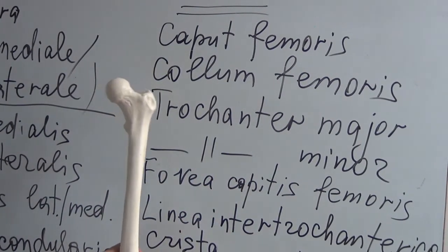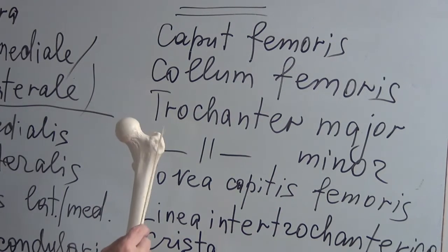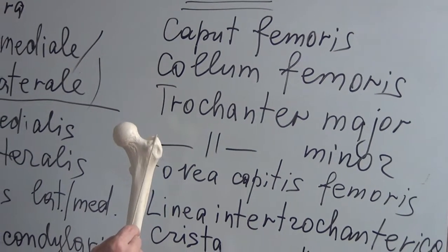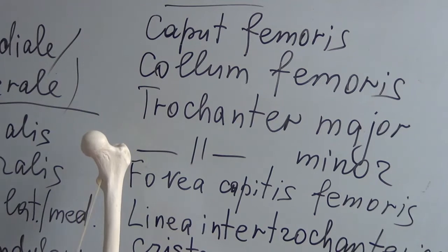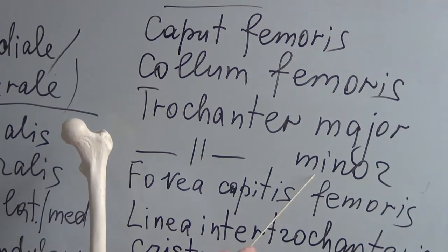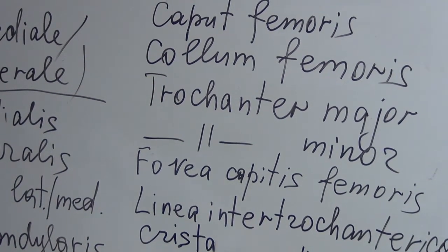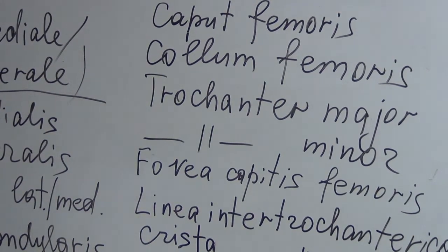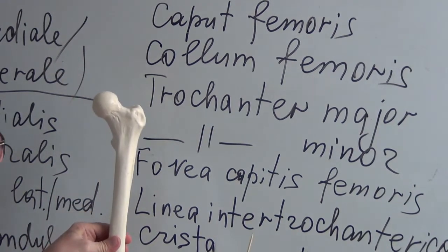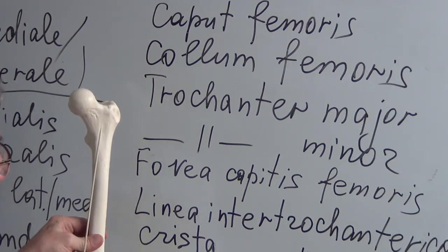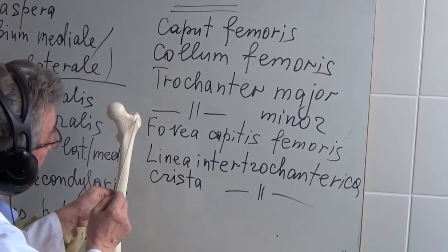There are also two large processes called the trochanter major and the trochanter minor. Between the trochanter major and trochanter minor we can find the linea intertrochanterica.